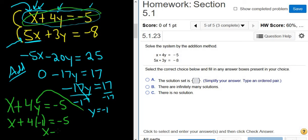So x minus 4 equals negative 5. And then add 4 to both sides. So we get x equals negative 1.